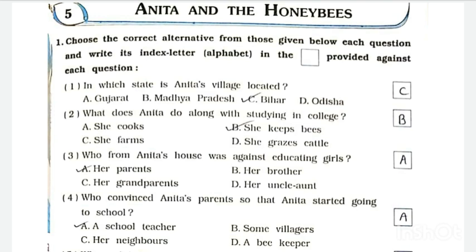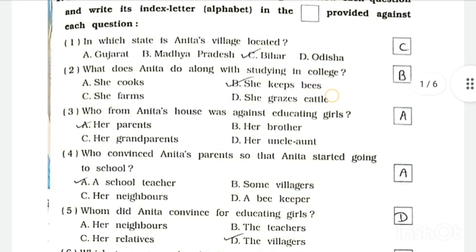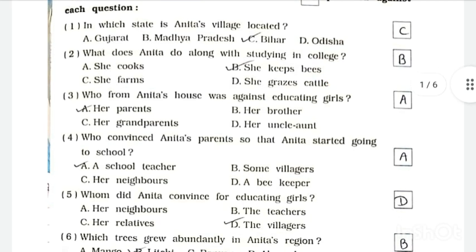Question Number 2: What does Anita do along with studying in college? Answer is B - she keeps honeybees. Question Number 3: Who from Anita's house was against educating girls? Answer is A - her parents.